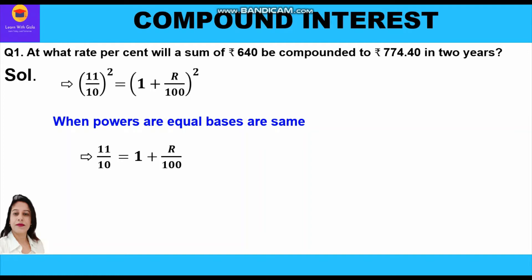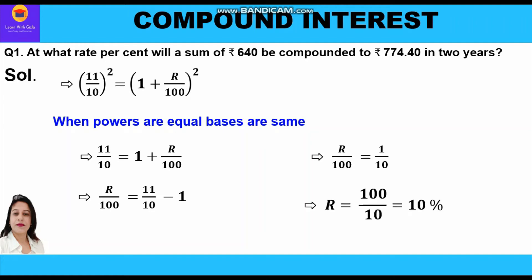Taking 1 to the other side it becomes minus 1, so r upon 100 is equal to 11 by 10 minus 1. Taking LCM we get r upon 100 is equal to 1 by 10. Cross multiplying: r is equal to 100 by 10, which is equal to 10 percent. So finally we got the rate percent as 10 percent per annum. This is our final answer.